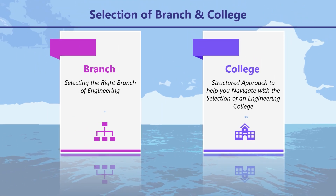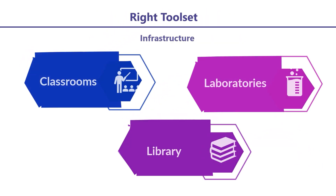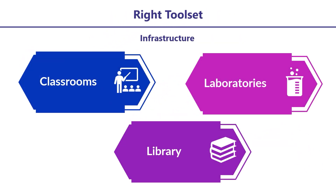Choose a college which will equip you with the right toolset, right skillset, and the right mindset. Right toolset means the right infrastructure. Are the classrooms comfortable and conducive to help you learn? Are the laboratories equipped with industry-grade modern equipment? Does the library have adequate books, magazines, and journals?